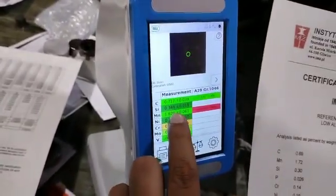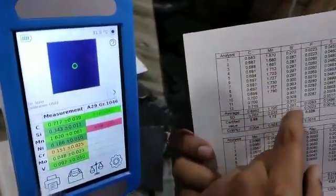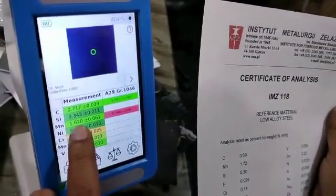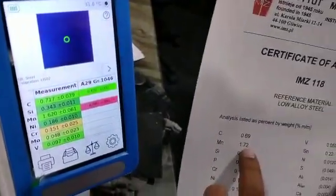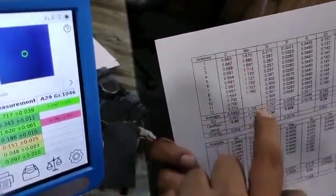You can see silicon 0.34. Here the reading is 0.30 and silicon variation is up to 31. Manganese is 1.62 and here 1.72. You can see here manganese, it is from 1.67 to 78.